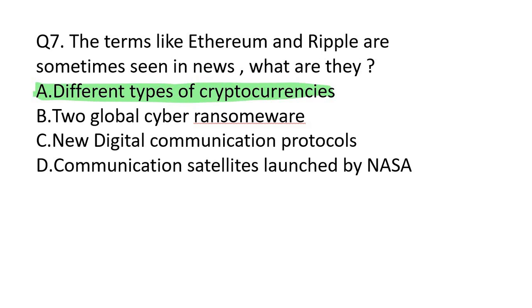When we talk about Ethereum, Ripple, Litecoin, Libra, and Bitcoin — these are types of cryptocurrencies. You may wonder what cryptocurrencies are. Let us understand that as well. Cryptocurrencies are digital currencies.